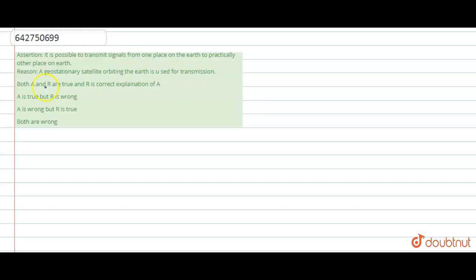The options are: both A and R are true and R is correct explanation of A. Second option, A is true but R is wrong. Third option, A is wrong but R is true. Fourth, both are wrong.